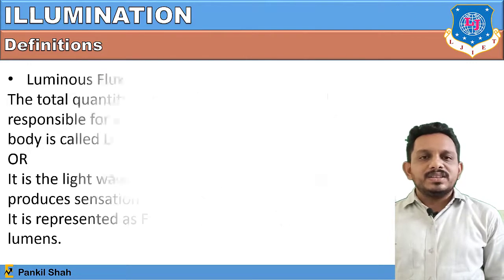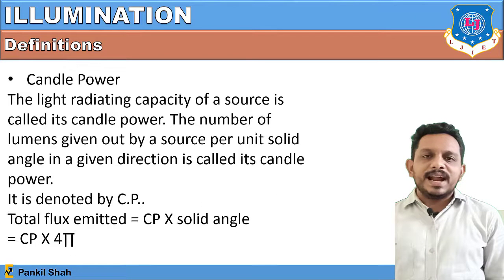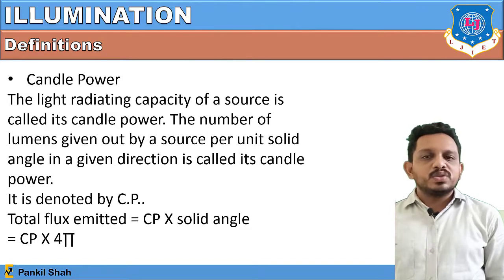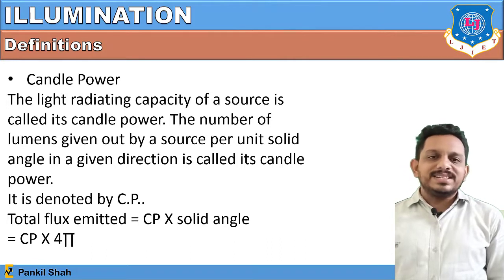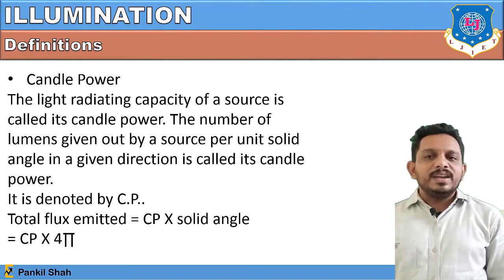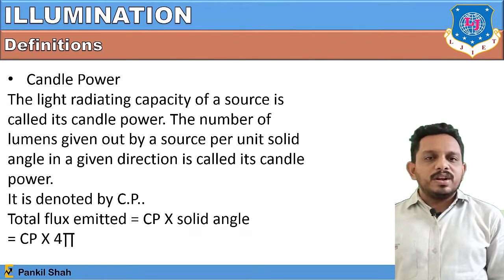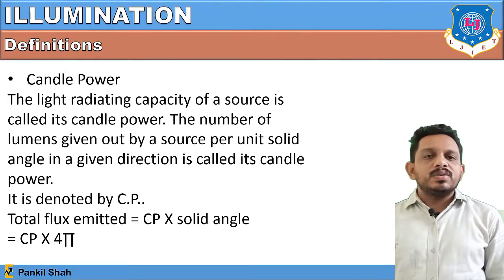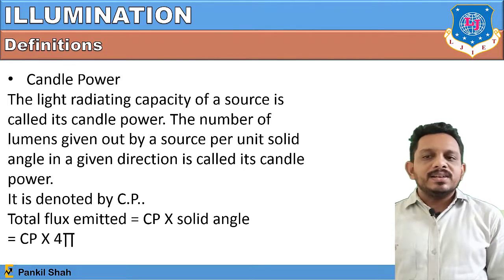The next definition is candle power (CP). The light radiating capacity of a source is called candle power — how much light is radiated. The number of lumens given out by a source per unit solid angle in a given direction is known as candle power. It is denoted by CP, and total flux emitted equals candle power multiplied by solid angle: φ = CP × solid angle.